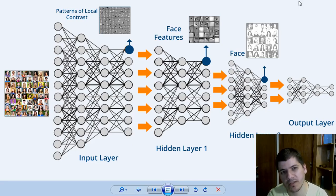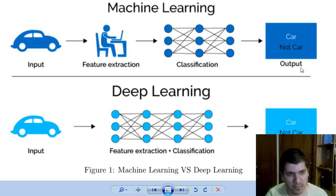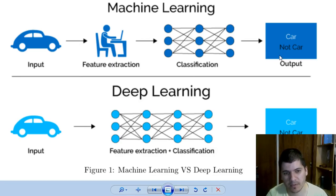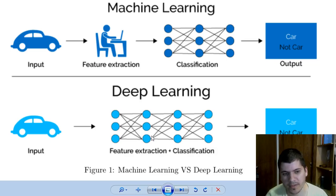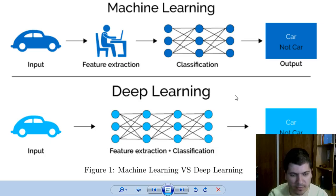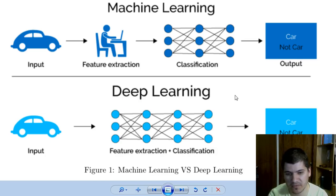It's constantly being trained so it can work more properly. In machine learning we have an input, a feature extraction, a classification, and then an output, which can be utilized to predict future data and recognize other patterns. In deep learning we have multiple hidden layers, adding another depth of complexity to this type of algorithm, but the main objective is the same: we have an input data set and we want to predict future data.